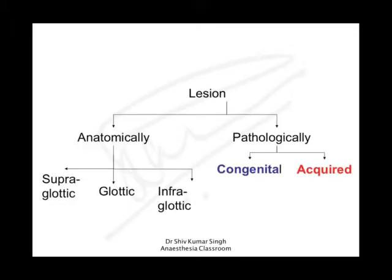Stridor can happen because of anatomical lesions or pathological lesions. Anatomically they can be classified into supraglottic, glottic, and infraglottic lesions, and pathologically they can be congenital or acquired. The ones in blue will be congenital causes and the red will be acquired causes.